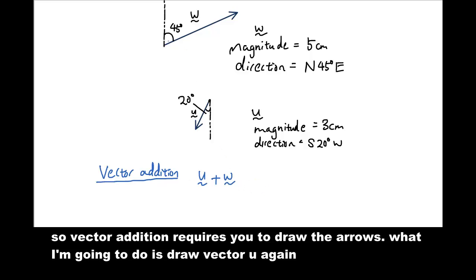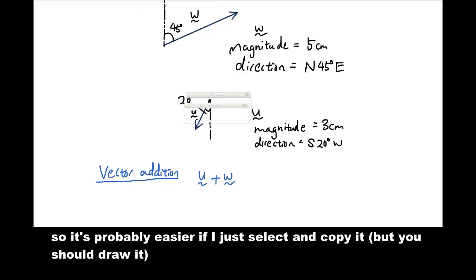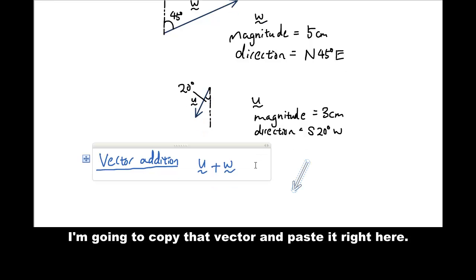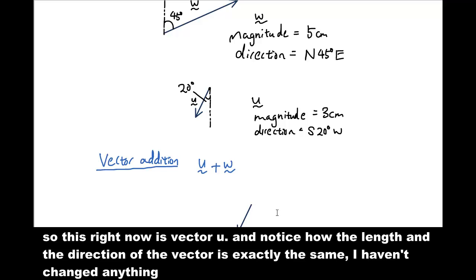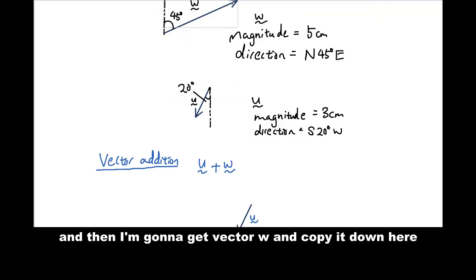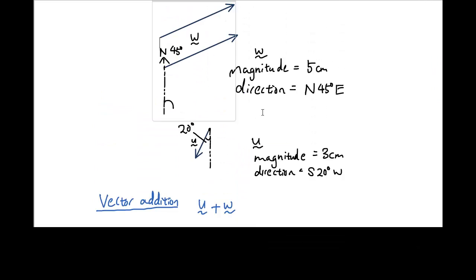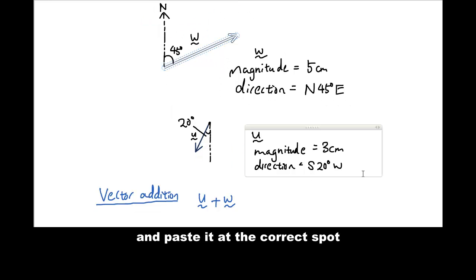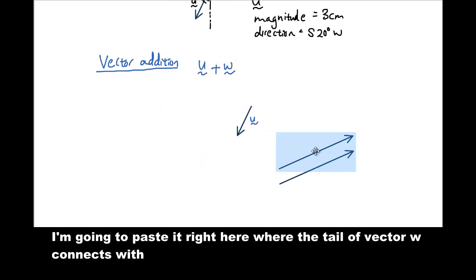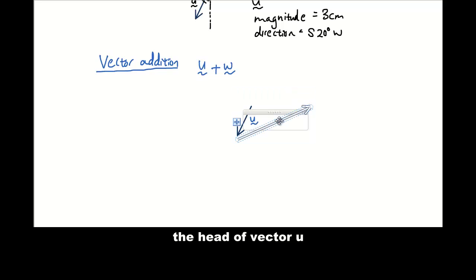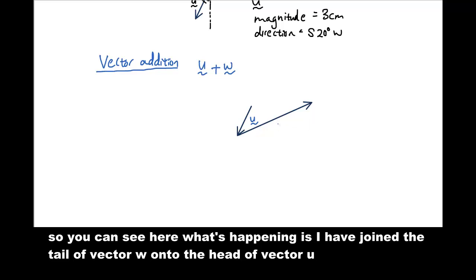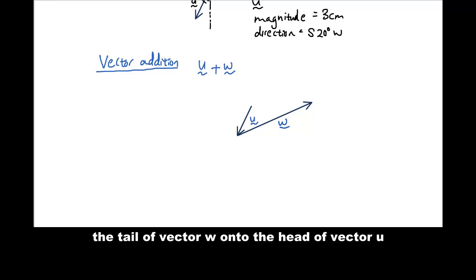So vector addition requires you to draw the arrows. So what I'm going to do is I'm going to draw vector u again. So it's probably easier if I just select it and copy it. I'm going to copy that vector and paste it right here. So this right now is vector u and notice how the direction and the length of the vector is exactly the same. I haven't changed anything. So this is vector u and then I'm going to get vector w and I'm going to copy it down here. I'm going to paste it at the correct spot.